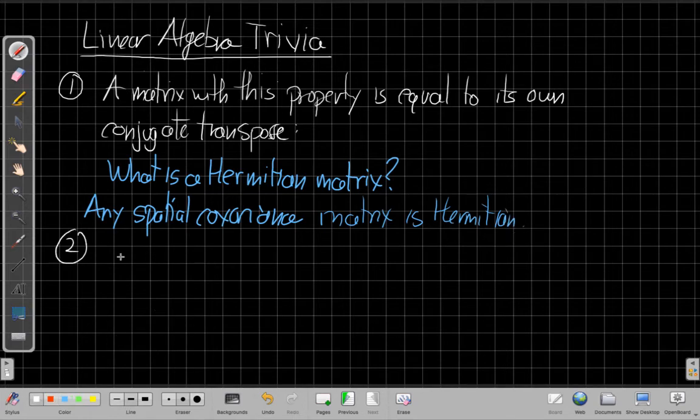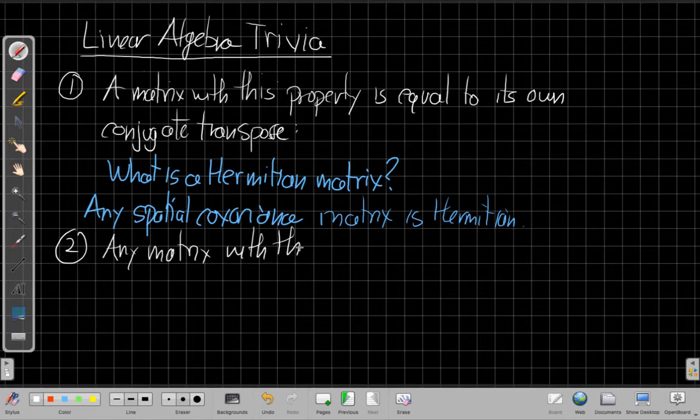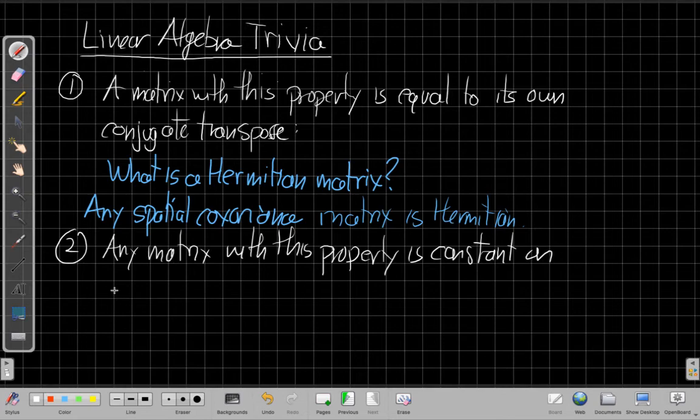Second one, any matrix with this property is constant on the diagonals. All right, so if I look like on the main diagonal or just one above or one below, everything on that diagonal is the same value. I go up another one, it's still equal to that.